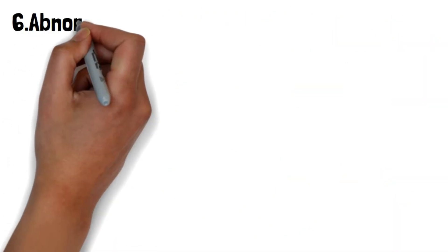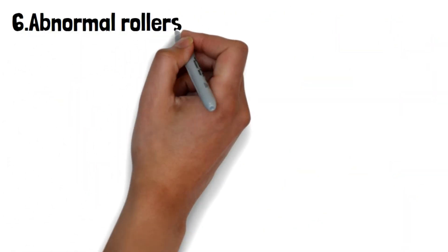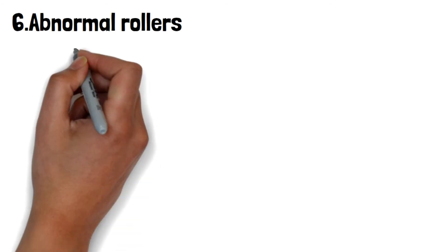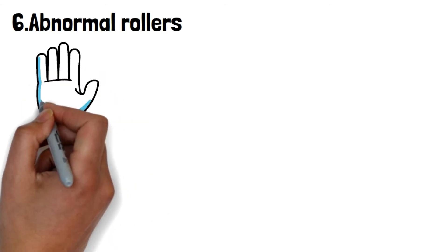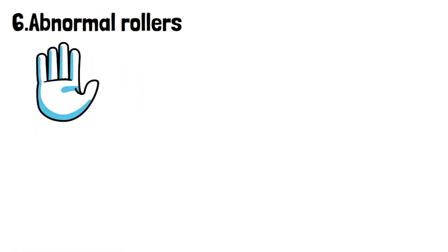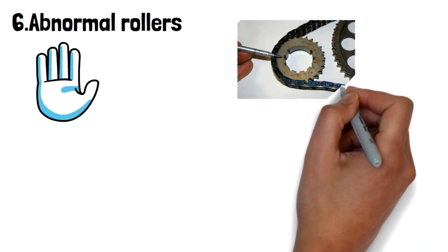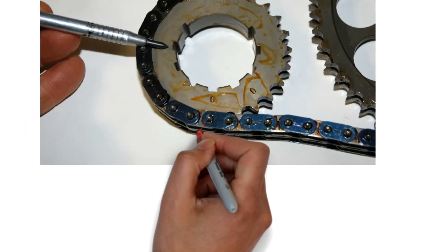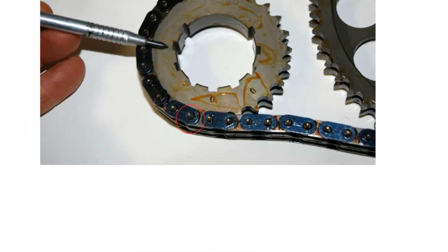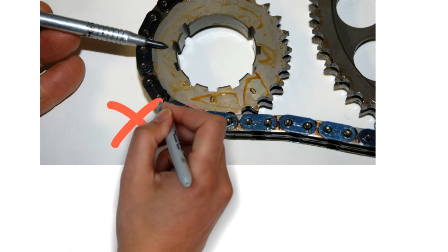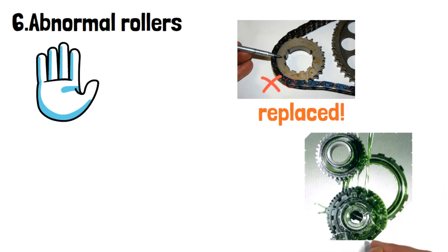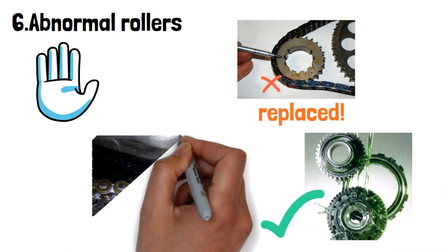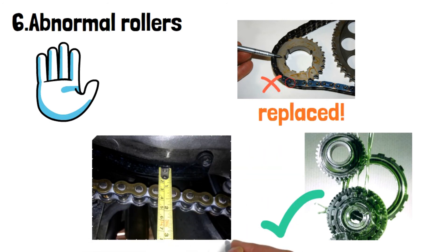Number six: abnormal rollers. Under the normal situation, the rollers should be rotated freely by turning it by hands. Visually inspect the appearance of the rollers for any cracks, slims or damage. If any cracks or damage found, the chain must be replaced. And if the lubricating oil is deficient, remember to re-lubricate. Last, remember to check if the chain link holes are too big.